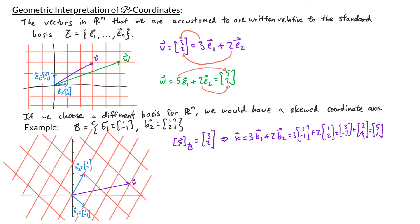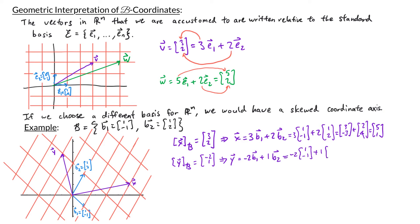Let's try another example. Let y have b-coordinates (-2,1), meaning y equals negative 2 times b1 plus 1 times b2. Drawing y on the xy plane, we go backwards twice in the direction of b1 and forward once in the direction of b2. Computing standard coordinates: negative 2 times (1,-1) plus 1 times (1,2) equals (-2,2) plus (1,2) equals (-1,4). So if a vector has b-coordinates (-2,1), its standard coordinates are (-1,4).